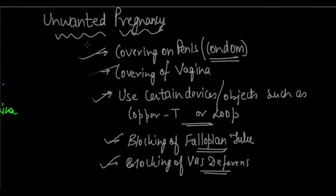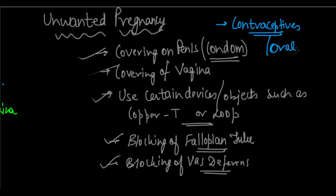There is another method to counter unwanted pregnancy which I forgot to mention — contraceptives. These are oral pills taken by the woman, which change the body's hormonal mechanism in such a way that the egg is not released into the fallopian tube or into the uterus. In this way, we can avoid unwanted pregnancies.